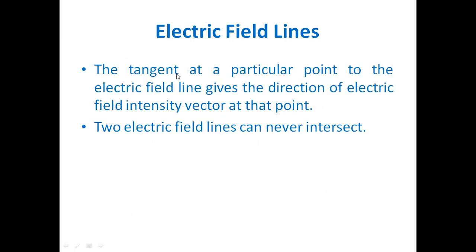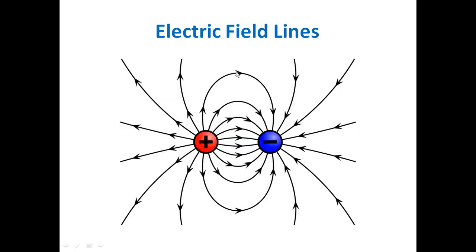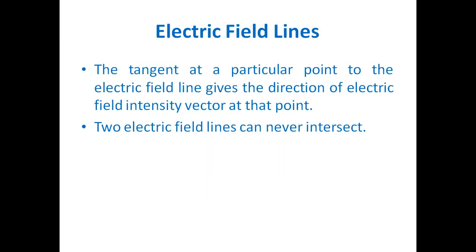Now we will discuss some properties of electric field lines. The tangent at any particular point on the electric field lines gives the direction of the resultant electric field at that particular point. So if you want to find the direction of electric field at a given point, just draw a tangent there — the direction of the tangent gives you the electric field intensity vector at that point.